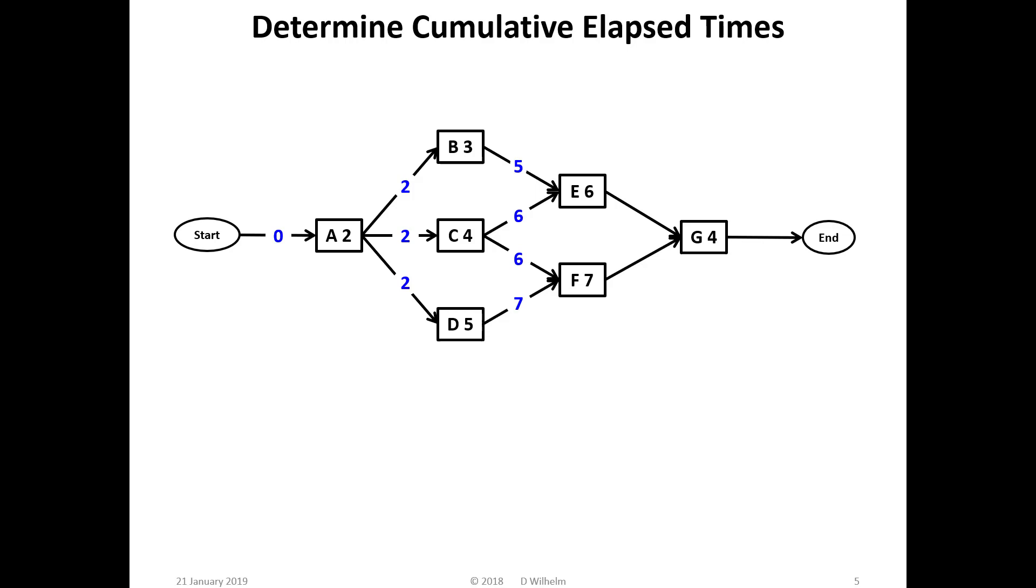Now it gets interesting. Task E has to wait for both tasks B and C to be complete before it can start. B is done after five days, C after six days, so task E can begin only after day six, when both its prerequisite tasks are complete. So, task E can start after six days, takes six days to execute, so is complete at the end of 12 days.